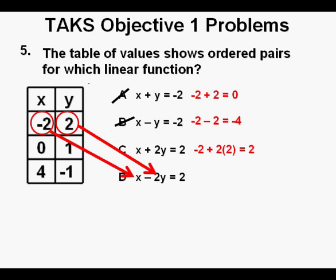Still we need to try out answer D. And answer D for the point is negative 2 minus 2 times 2, which equals negative 6. So we cross off answer D as well.